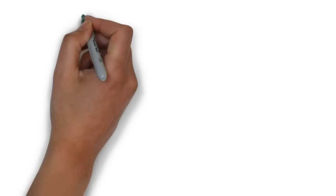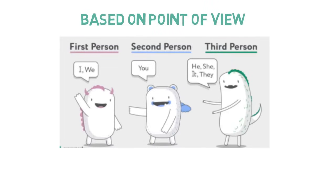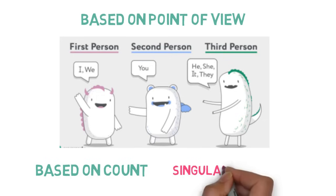Now, based on point of view, subject may be in first person, second person or third person. We have he, she, it, they, and based on count, subject may be singular or plural.